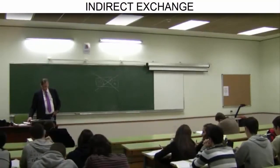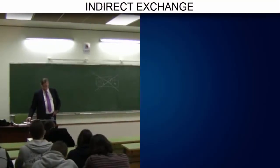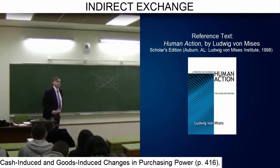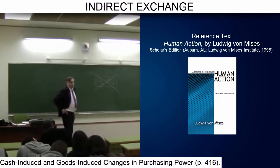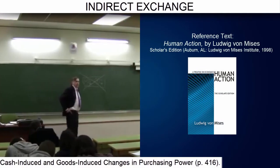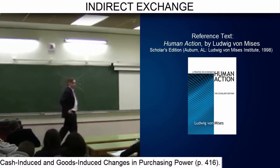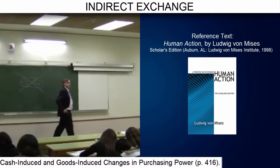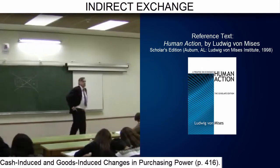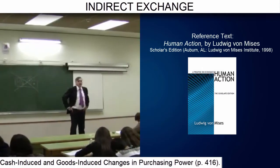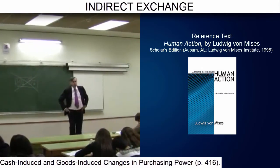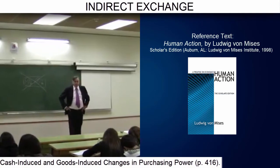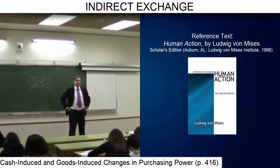Now I will conclude with two brief comments. The first is that in a market economy, the purchasing power of the monetary unit is in a constant state of flux, and variations can originate on the monetary side or on the real side.